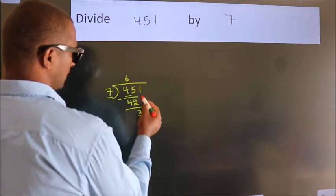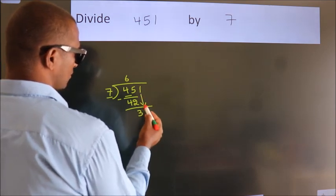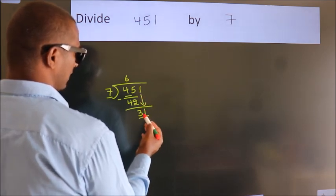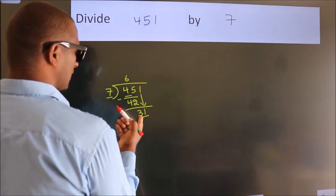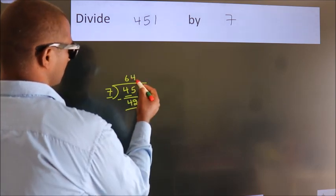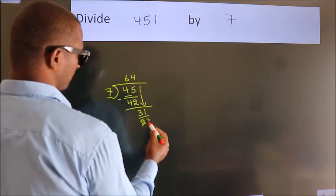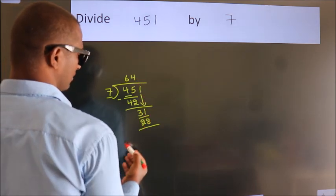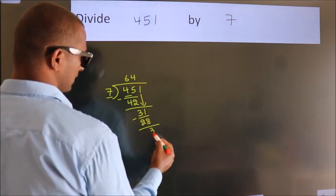After this, bring down the beside number. So, 1 down. So, 31. A number close to 31 in the 7 table is 7 times 4 equals 28. Now we subtract. We get 3.